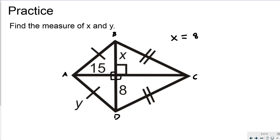So I can go ahead and use the Pythagorean Theorem to calculate that 8 squared plus 15 squared must be equal to y squared. So that's just an application of Pythagorean Theorem. 8 squared is 64 plus 15 squared is 225 is equal to y squared.